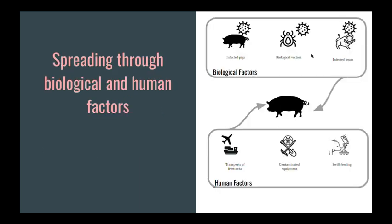Let's see how the spread of the disease works. The spread of African swine fever has two main factors. The biological path includes infected pigs, biological vectors like ticks, or infected boars. And then there is the human factor, which is multifactorial and involves both a specialized population and the general population.